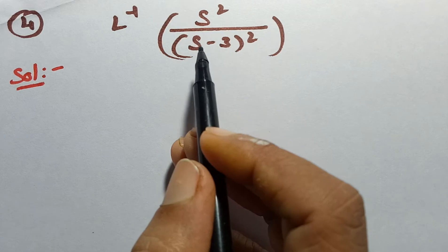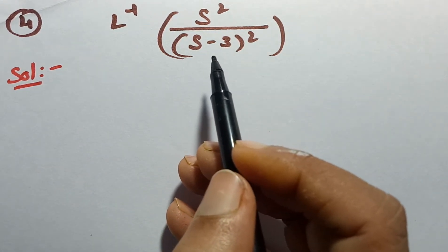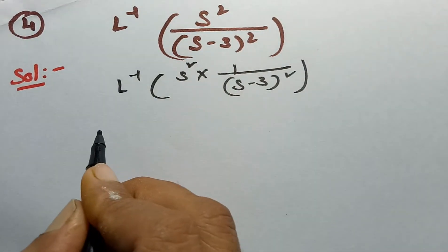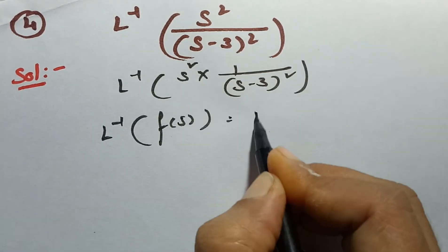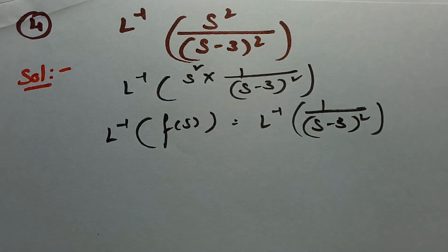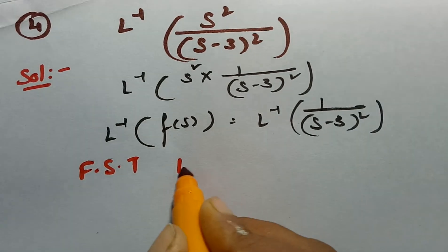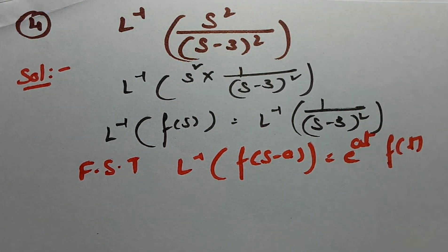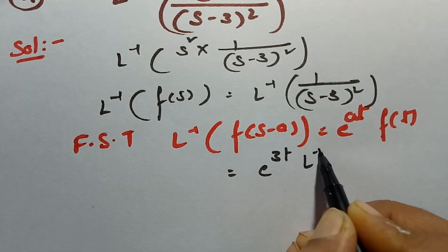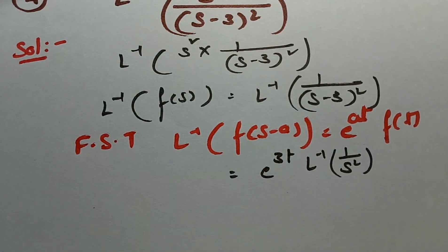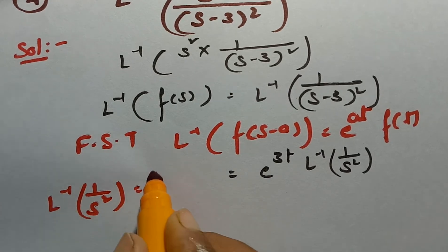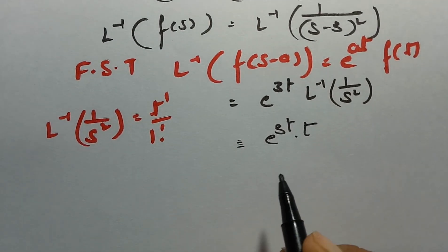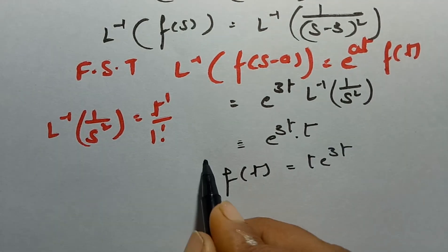Last but not least — let's do this together. In this question, s is multiplied twice, so we have to derive for two times. Taking out s²: s² × 1/(s−3)². The inverse Laplace transform of F(s) = 1/(s−3)². Applying the first shifting theorem, it becomes e^(3t) times the inverse Laplace transform of 1/s². Since inverse Laplace transform of 1/s² = t, so f(t) = t·e^(3t).